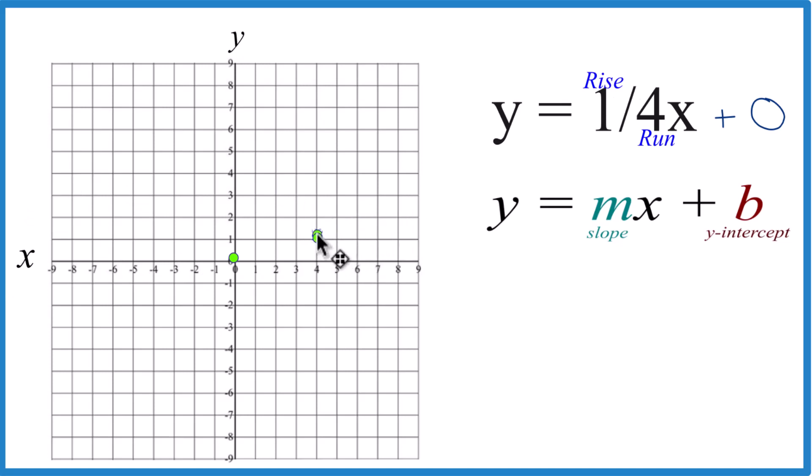We'll rise one from this new point and go one, two, three, four, and we got that. You can see the line, and you can go the opposite direction, down one, to the left, one, two, three, four.